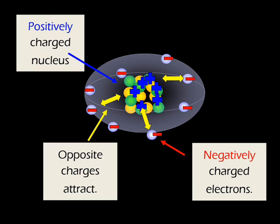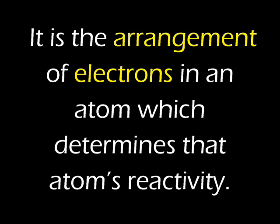The electrons are thought to be in various arrangements circling the nucleus. It is this variation in arrangement of electrons that is responsible for the way each element interacts with other elements. In other words, the arrangement of electrons around each nucleus of an element's atoms determines the reactivity of that element. Some elements are highly reactive while some appear to not react at all with others.